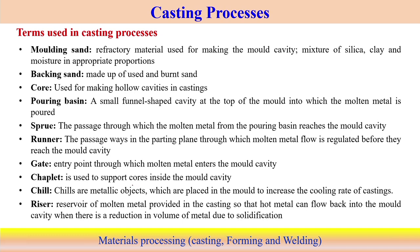Sometimes chaplet is used to support the cores inside the mold cavity. Chills are also sometimes used to modify the solidification process — basically to modify the cooling rate during casting. Chills are usually metallic objects placed inside the mold just to increase the cooling rate; they are externally added to modify the cooling rate during the casting process. Then we use the riser — the riser basically acts as a reservoir to compensate for material lost due to shrinkage of the mold cavity during solidification. The riser should be able to supply liquid metal when there is shrinkage after solidification in the mold cavity. That is the purpose of using the riser in the casting process.